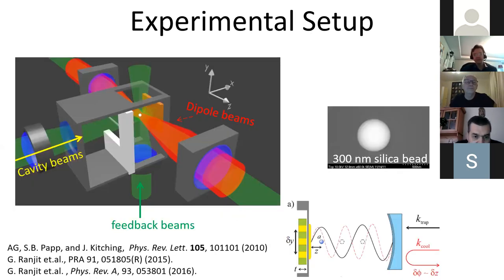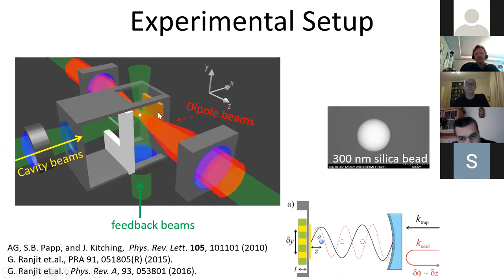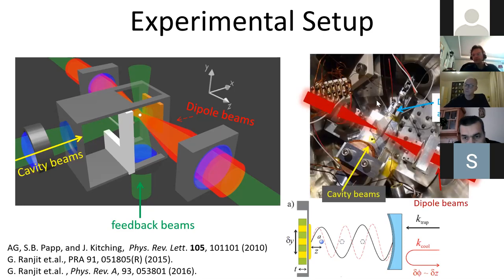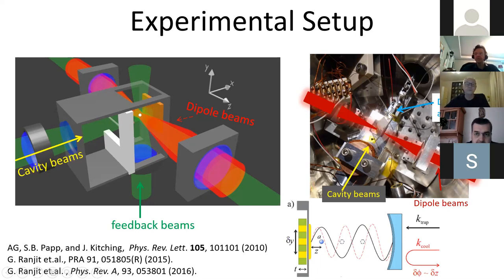In practice, the experiment uses two counter-propagating dipole beams to initially catch nanoparticles, which then transfer into an optical cavity trap where gravitational measurements take place. An additional set of lasers provides laser feedback cooling of the center-of-mass motion. The test mass is a 300-nanometer silica bead. The cavity beams run along one axis, the initial collection trap is at 90 degrees, and beyond that is the drive mass actuator with the gravitational source mass mounted on the end.